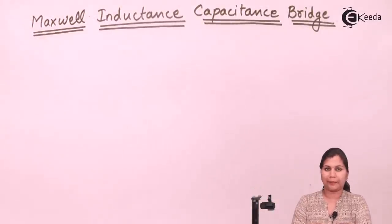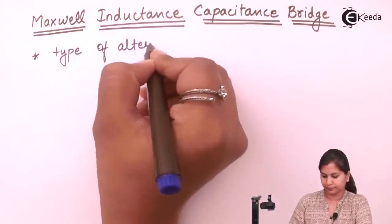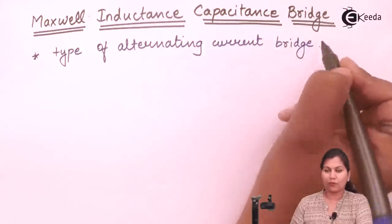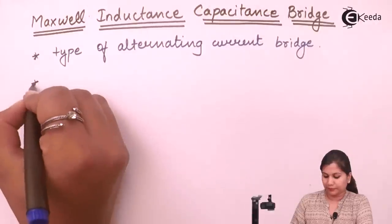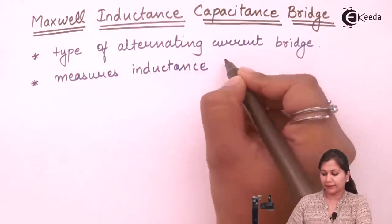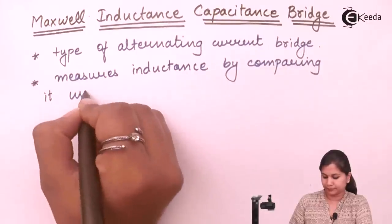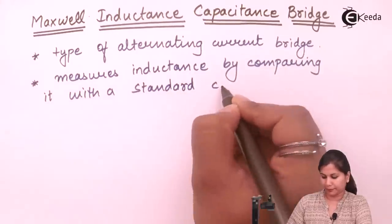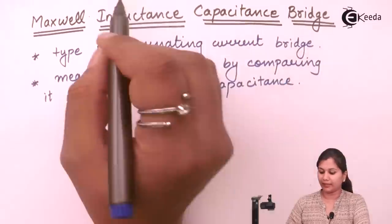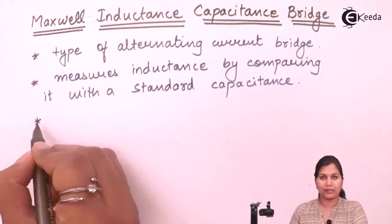The Maxwell inductance capacitance bridge is a type of alternating current bridge which is used for the measurement of self-inductance. It measures inductance by comparing it with a standard capacitance — that is why it is called the Maxwell inductance capacitance bridge. Inductance is measured in terms of the capacitance, and Maxwell is the scientist who invented it.